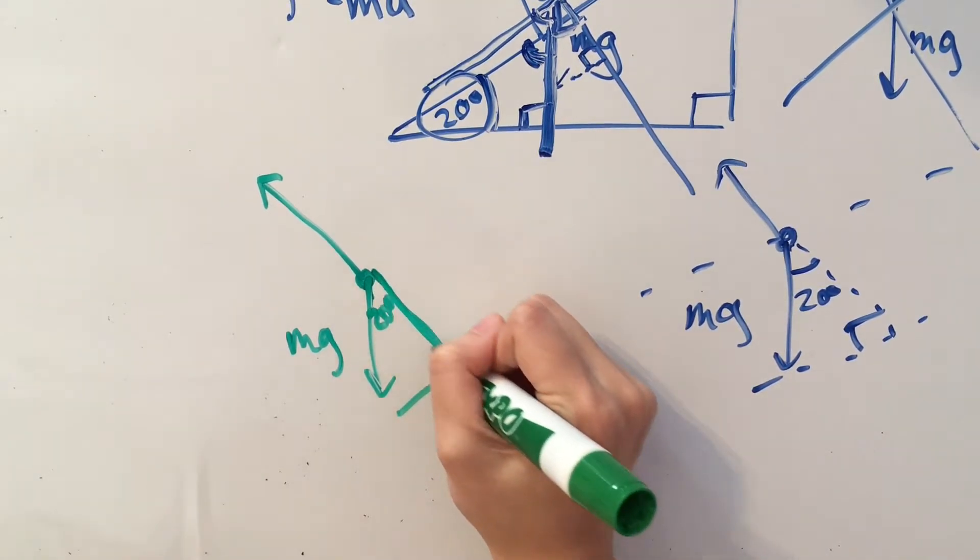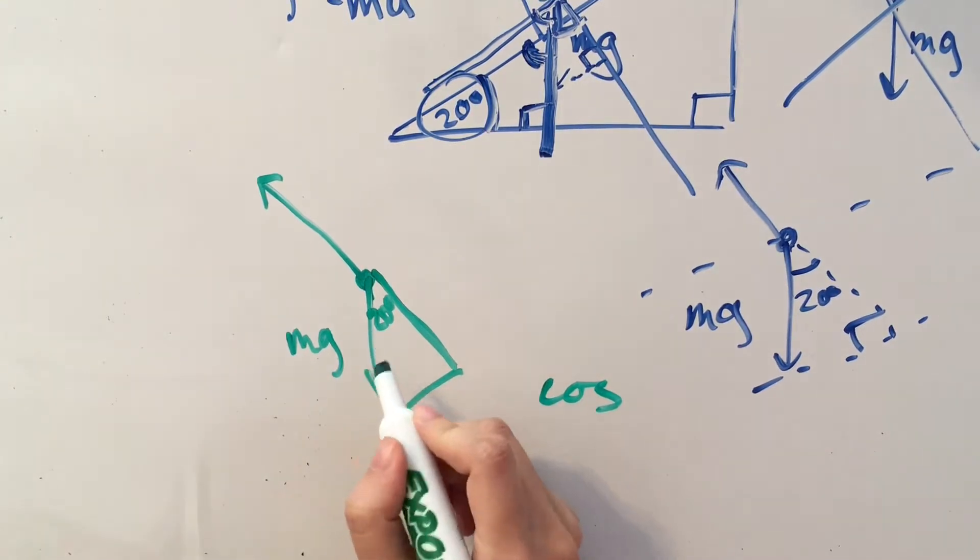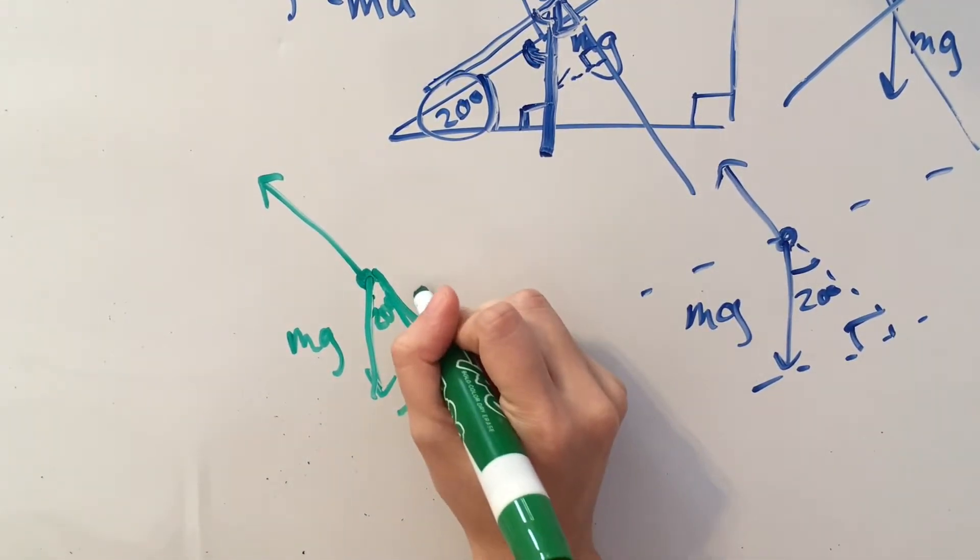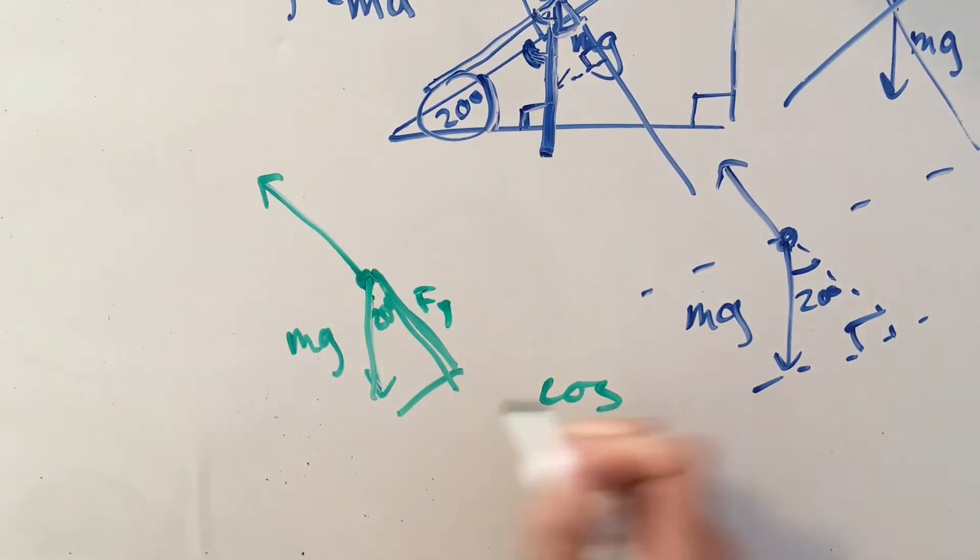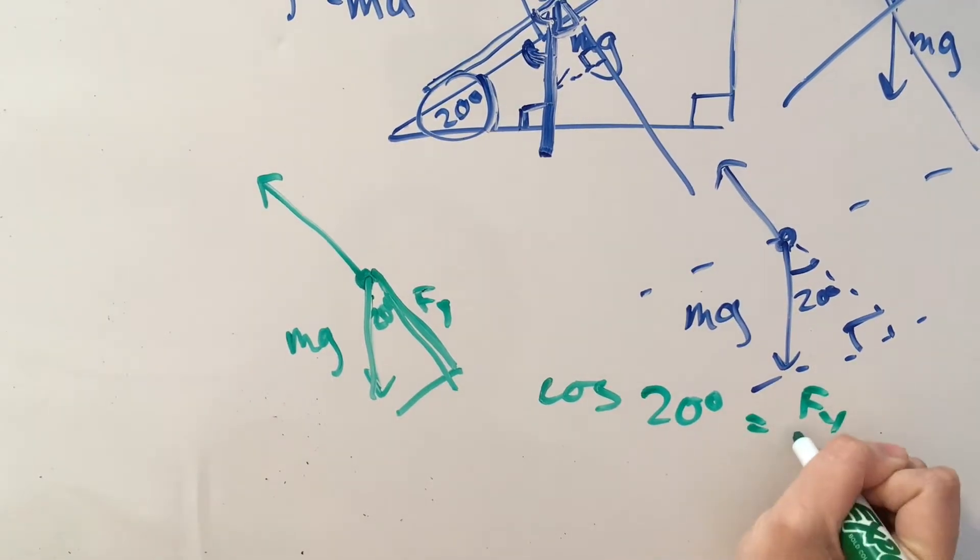This would be our y component and this would be our x component on our new reference frame. To get our y component, we'll need to use cosine because cosine is adjacent over hypotenuse. And this is what we're solving for, the y component.